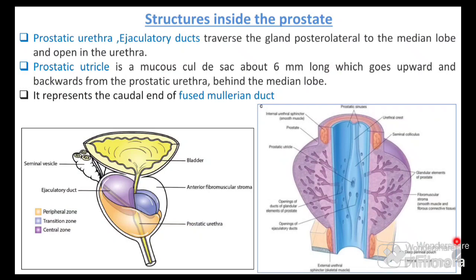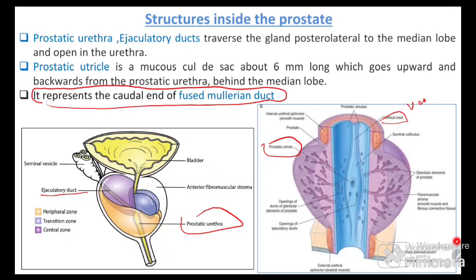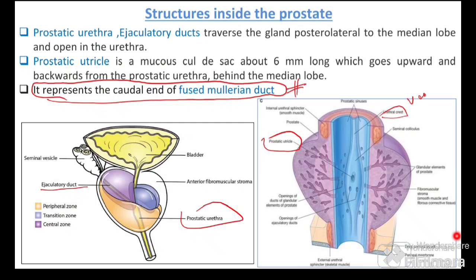Structures within the prostate include two ejaculatory ducts and the prostatic urethra. At the verumontanum, at its central part, there is a structure called the prostatic utricle. The prostatic utricle represents the caudal end of the fused Müllerian duct — remember this, it is normally asked in examinations.